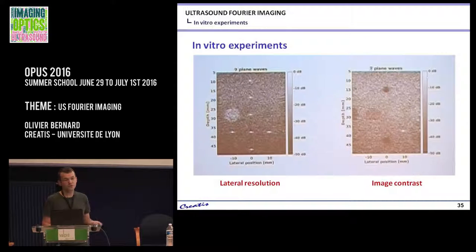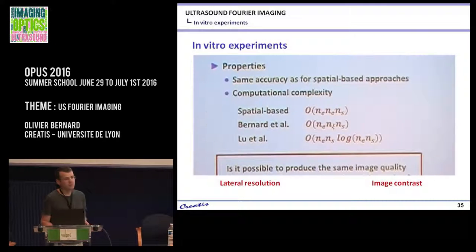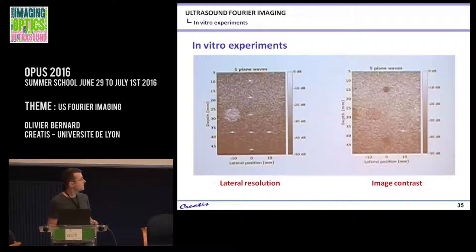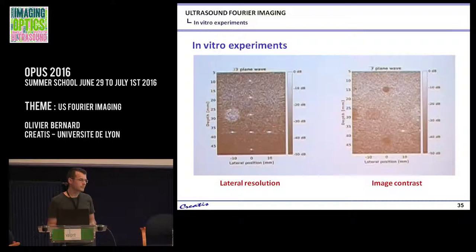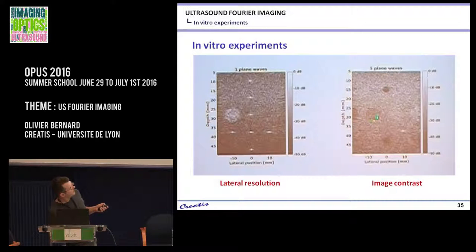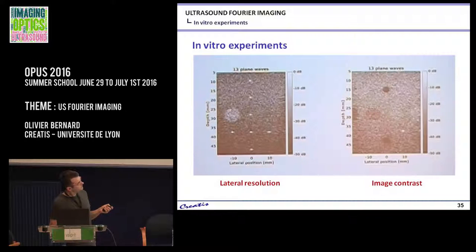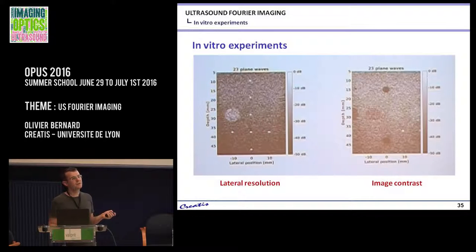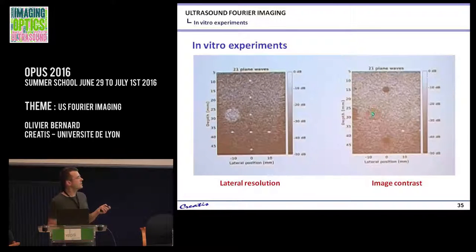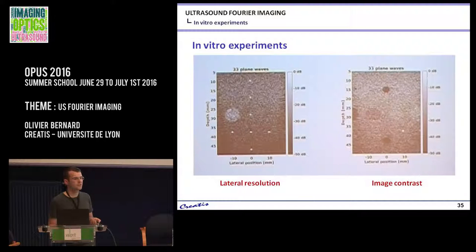Question from audience about image contrast on the right-hand side image regarding depth. The speaker explains the images are displayed with varying dB ranges — approximately minus 3, minus 6, minus 12 — which accounts for the apparent contrast difference, not attenuation factors.